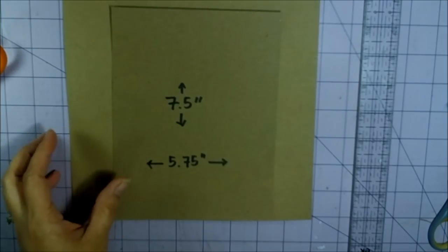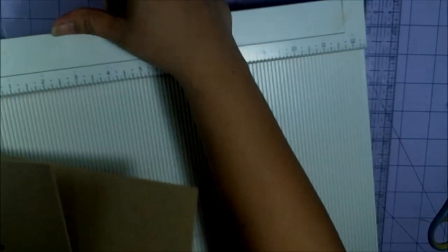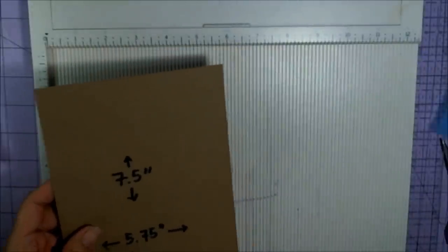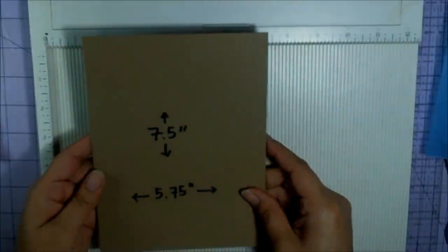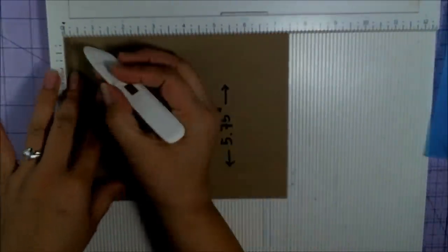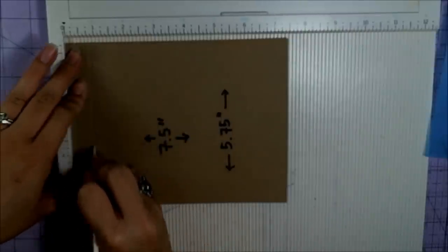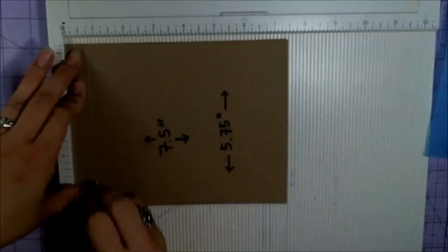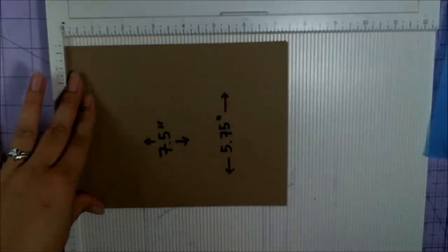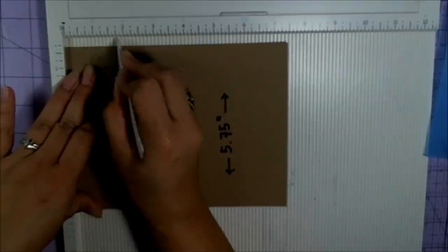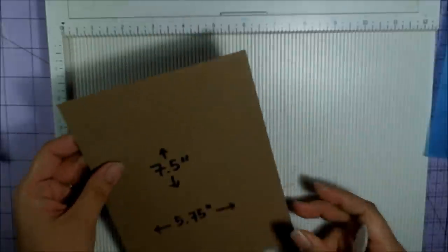First you're going to need to score these. For this one, you turn it to the 7.5 inch width and score at 3/4 of an inch. You have to score it really good because this is chipboard and it's thicker than cardstock, and then at 1 and 3/4 of an inch. That is all you need to do for this right now.